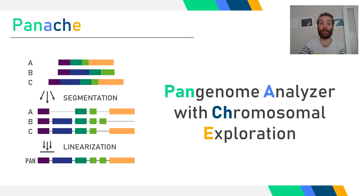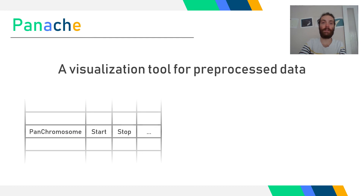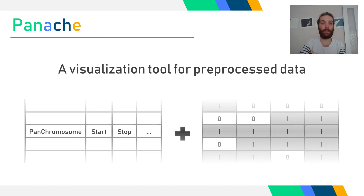Panache stands for Pan-genome Analyzer with Chromosomal Exploration, and displays pan-genomes in a browser-like fashion. The representation takes pan-genomic blocks from the genomes and displays them along a linear axis following pan-genomic coordinates, ending in a positioned presence-absence matrix. This representation is brought to life within Panache as a web interface created with JavaScript, bits of the D3 library, and the framework Vue.js for easier development. The expected input is a pan-genomic data file in tab-separated format. The first columns give information on position and the pan-genomic coordinate system, while the last columns contain the presence-absence status of the pan-genomic blocks within each genome.